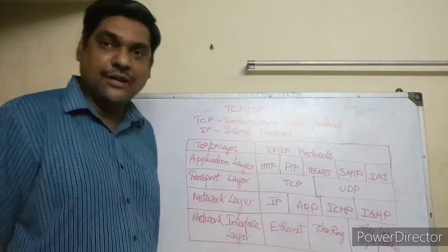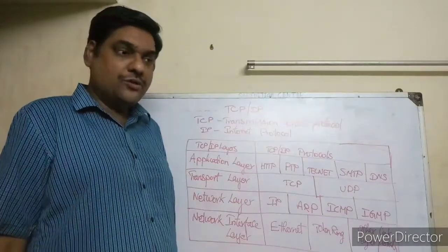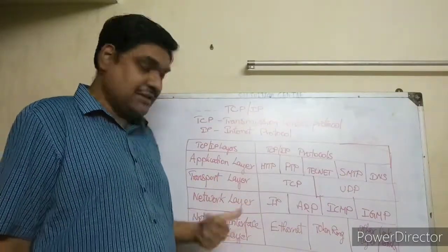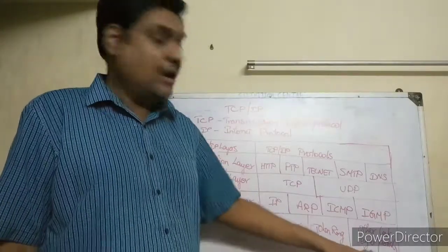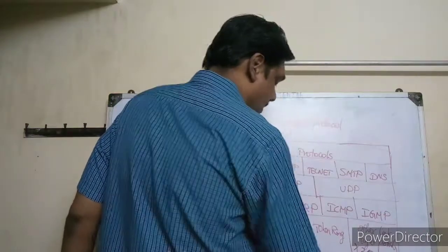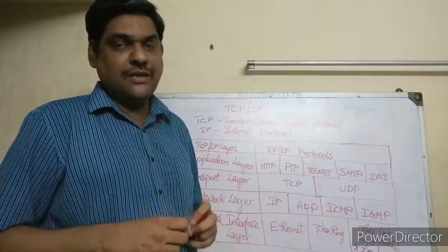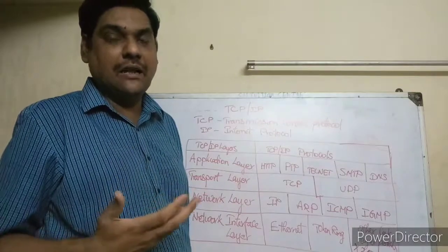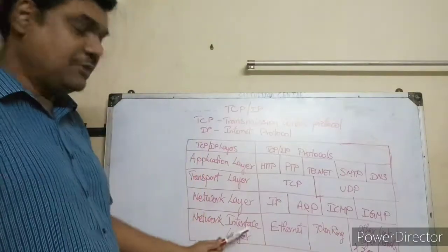The Network Interface layer corresponds to the OSI Data Link and Physical layers combined. It establishes the physical connection and data link. Protocols in this layer include Ethernet, Token Ring, and other link-layer protocols like X.25. These protocols are used for data transfer in local area networks.